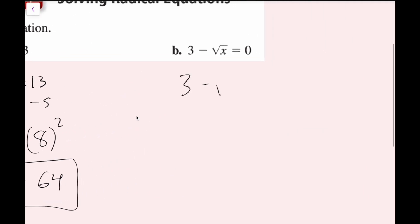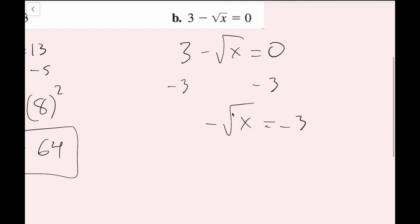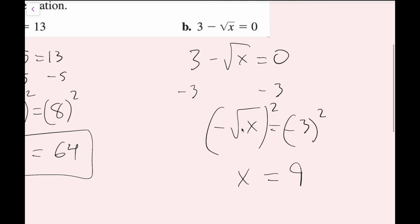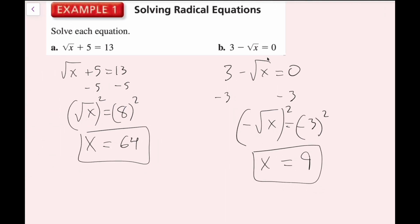For part b, 3 minus the square root of x equals 0. I subtract 3 on both sides to get the square root of x equals negative 3. Squaring both sides, negative times negative is positive, and I get x equals 9. Checking: 3 minus the square root of 9 is 3 minus 3, which equals 0. That works. And for part a, the square root of 64 is 8, and 8 plus 5 equals 13. Both answers check out.